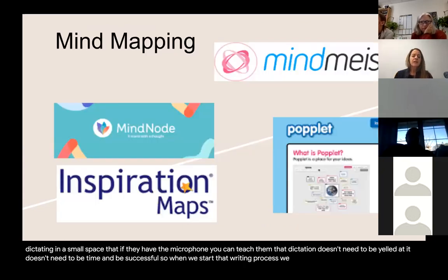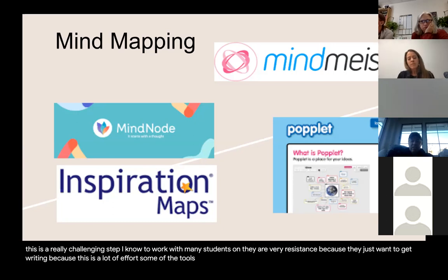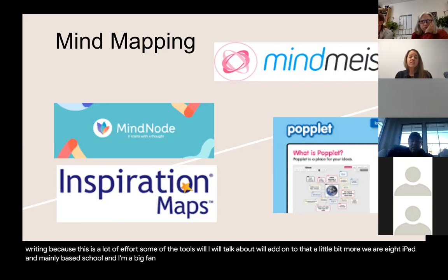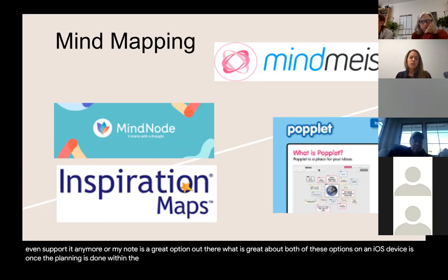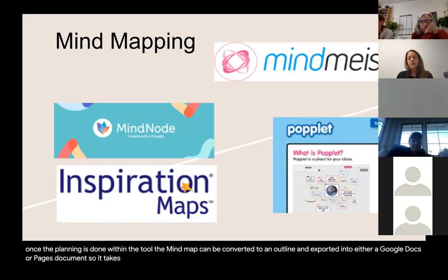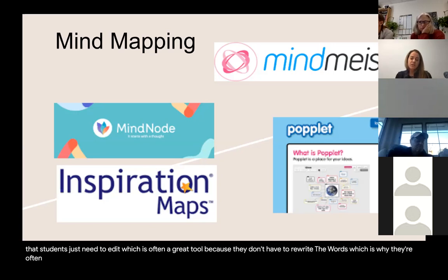When we start the writing process, we really focus on mind mapping, which is a challenging step — many students are resistant because they just want to get writing. We are mainly an iPad-based school and I'm a big fan of Inspiration Maps, the iOS version, or MindNote as another great option. What's great about both on an iOS device is that once planning is done, the mind map can be converted to an outline and exported into either a Google Docs or Pages document, so students don't have to rewrite the words.